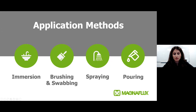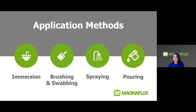There are a variety of methods to apply penetrant. For visible penetrant, the most common is aerosols, which work great for field inspection. Other methods used with bulk fluorescent or visible penetrant — depending on your specifications or recommendations from your level three — include immersion, brushing and swabbing, spraying, or pouring of the penetrant.